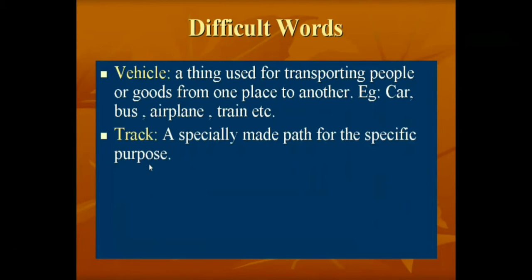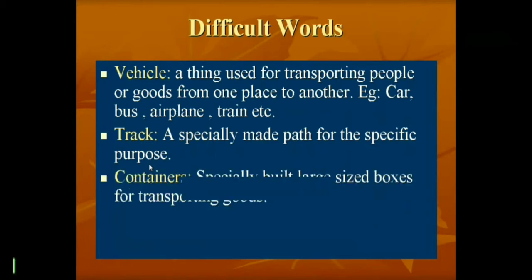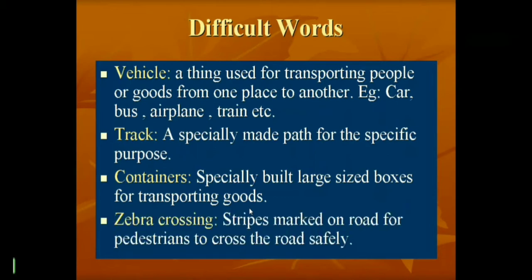The train runs on a railway track, and that track is made for a specific purpose. 'Containers' are specially built, large-sized boxes for transporting goods. 'Zebra crossing' — these are the stripes marked on the road for pedestrians to cross the road safely. Pedestrians are people who travel by foot.